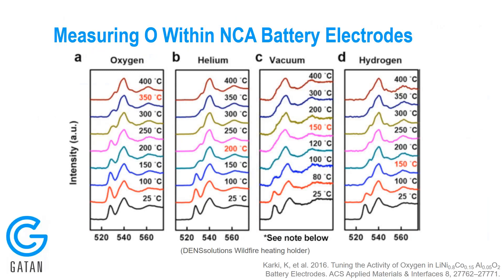Here is an example published more recently from Brookhaven National Lab. In this case, they were looking at the oxygen K edge as a function of temperature in a variety of different environments in an environmental TEM. They were looking at oxygen loss from a nickel-cobalt-aluminum battery electrode. By looking at subtle changes in the intensity of a pre-peak on the oxygen edge, they could see the change in oxygen content of this battery electrode under various environmental conditions.